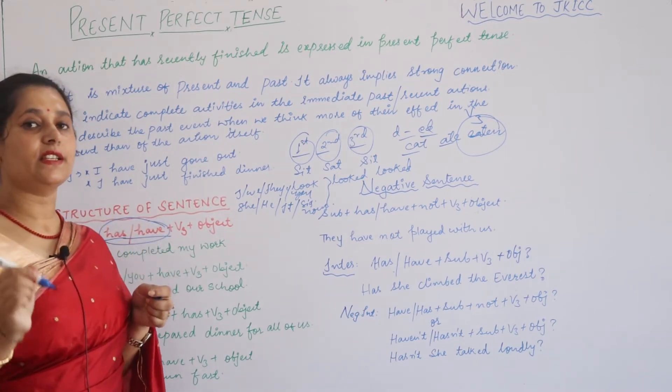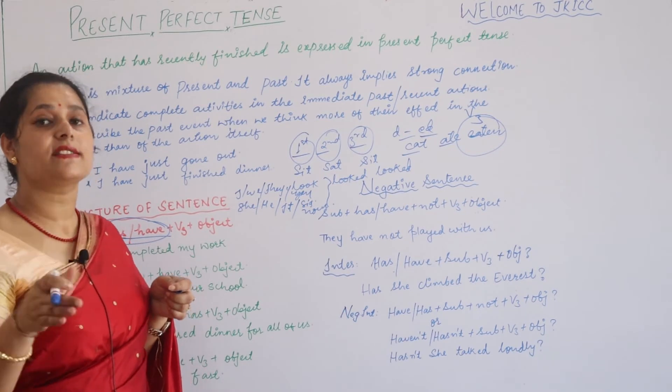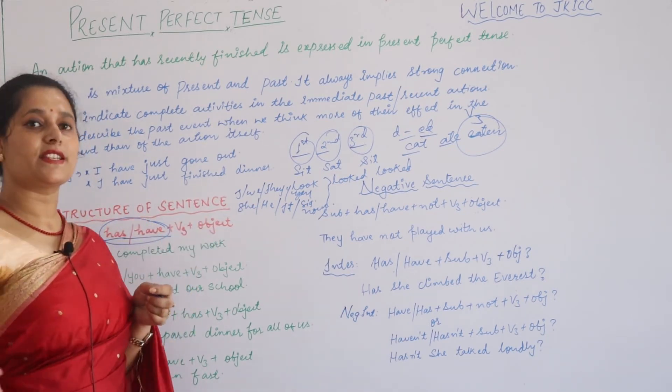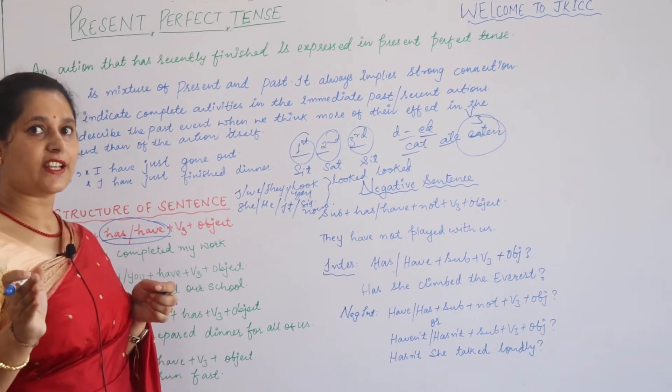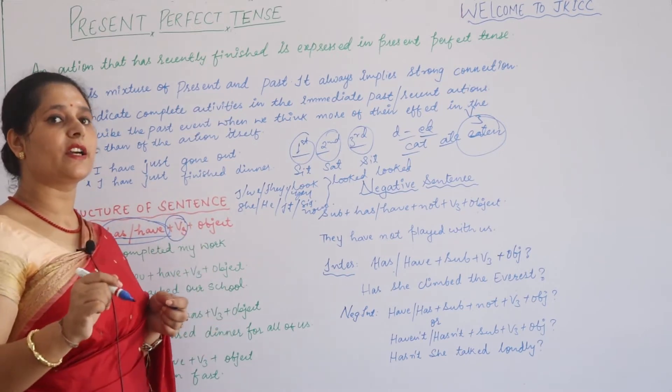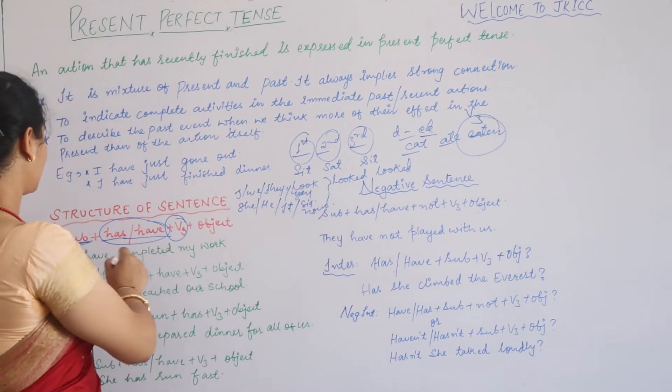Very important thing is that has and have, here we use as a helping verb. Has, have - you will know that this is perfect tense. In perfect tense, if you have has/have with the third form of verb, it is definitely present perfect tense.